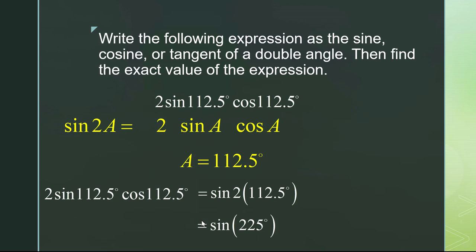225 degrees is one of our special angles. It has a reference angle of 45 degrees and is located in the third quadrant, which means it would be negative. So our final answer is negative square root of 2 over 2. The part about the reference angle — hopefully you're already familiar with that, but if not, go back and look at the module on reference angles to make sure you know those values.